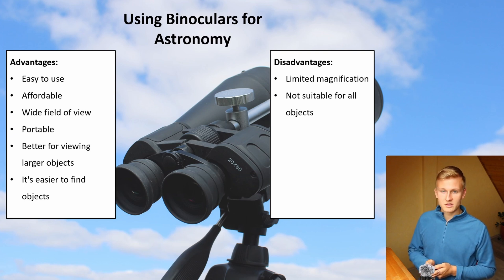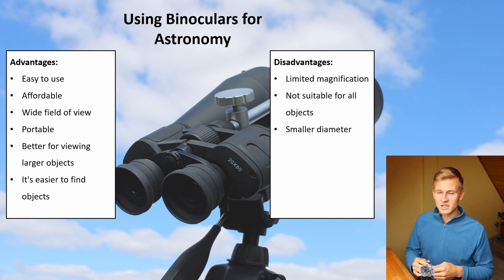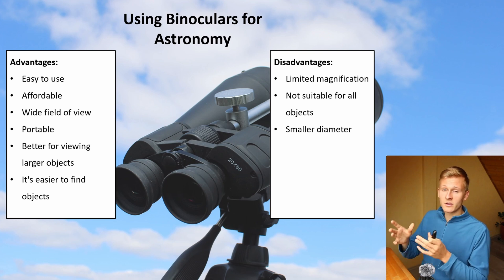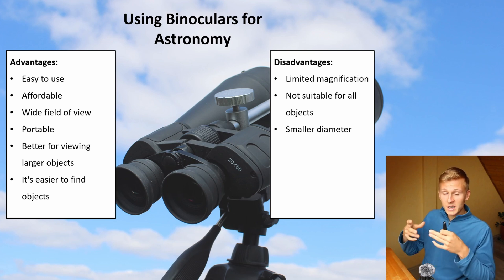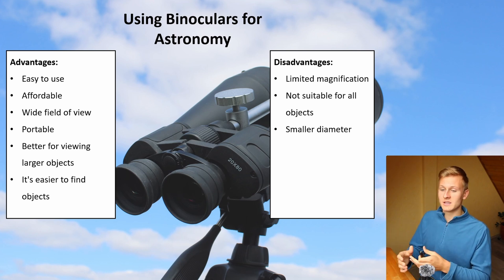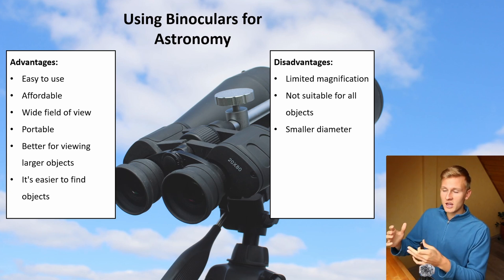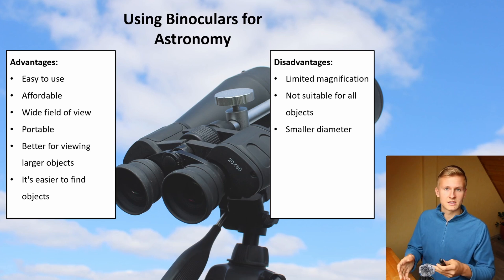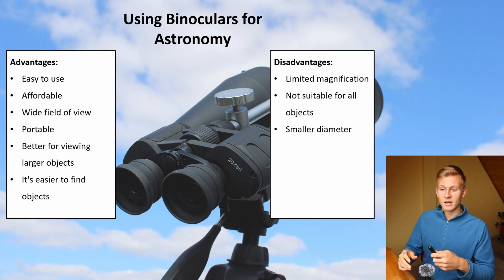Another disadvantage is that binoculars do have a smaller diameter. The diameter of the optical component is very important in astronomy because a bigger diameter means more light-gathering power. That's very important because those objects are very dark. When observing objects in the night sky, it's important to have a big diameter to gather as much light as possible. Usually binoculars have a smaller diameter, but there are differences. When buying binoculars, definitely make sure to choose ones with a bigger diameter, especially for seeing structures in galaxies and nebulae.